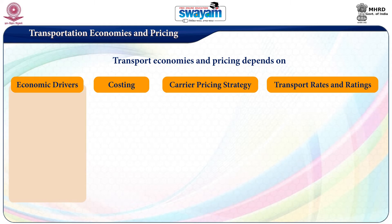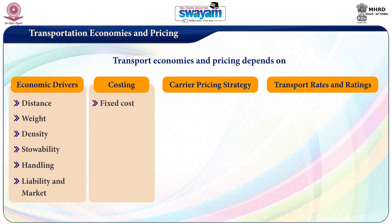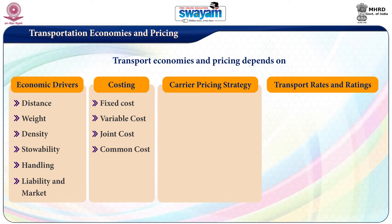The economic drivers are driven by factors like distance to be travelled, weight to be carried, density of the product, storeability of the product, handling of the product, liability, and the market conditions for the product. Transportation costing can be classified into fixed cost, variable cost, joint cost, and common cost. Carrier pricing strategy depends on cost of service and the value of service.